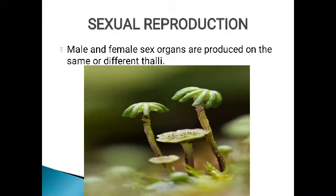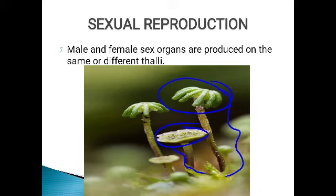In sexual reproduction, both male and female sex organs are formed. The male sex organ is the antheridium and the female sex organ is the archegonium. The male sex organ produces the male gamete called the antherozoid, and the female sex organ, the archegonium, produces the female gamete — the egg.